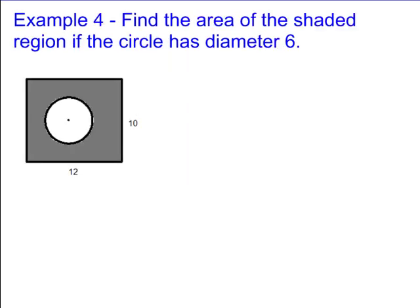Okay, the last couple examples I want to look at are examples involving shaded regions. Well, if you look at this picture, it says find the area of the shaded region. Well, the shaded region is just the region that's inside this rectangle, but not inside the circle.